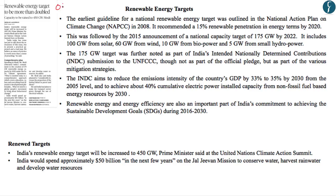This news appears on page number one and reads 'Renewable Energy Target to be More than Doubled.' Recently, Prime Minister Narendra Modi at the United Nations Climate Action Summit said that India is going to increase its renewable energy target. This discussion will become relevant from the perspective of environment, especially in the context of prelims. Before discussing the announcement, let us first understand what are India's renewable energy targets. The earliest guideline was outlined in the National Action Plan on Climate Change in 2008, which recommended that India should get 50 percent of its energy requirement from renewable energy by 2020.